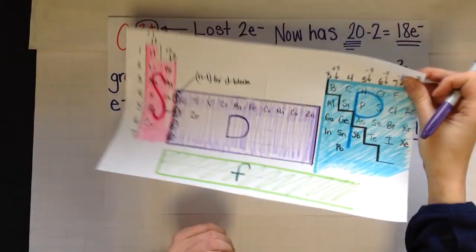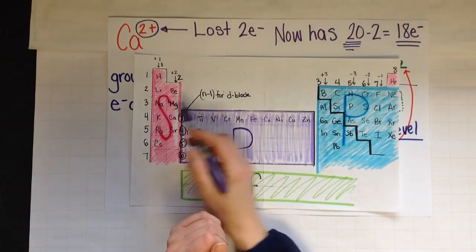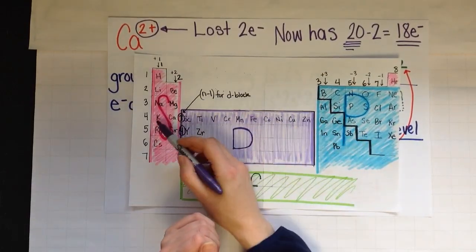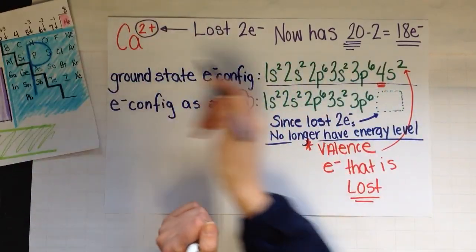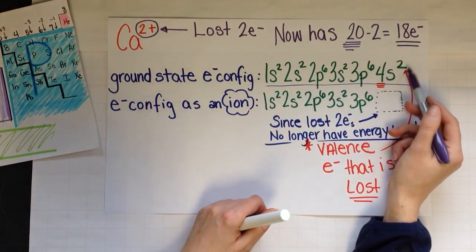I've written out its ground state. 1s2, 2s2, 2p6, 3s2, 3p6, 4s2. Lands me right on calcium.